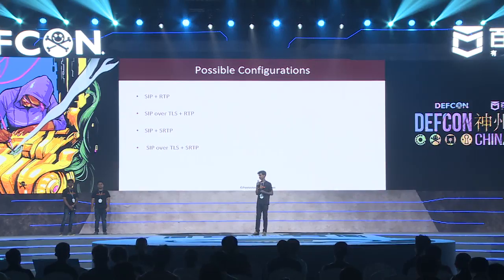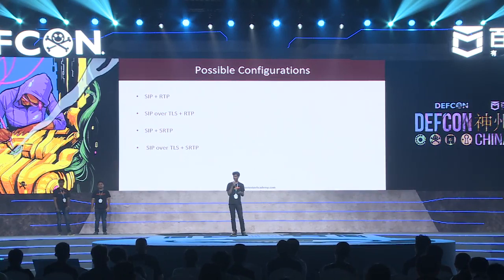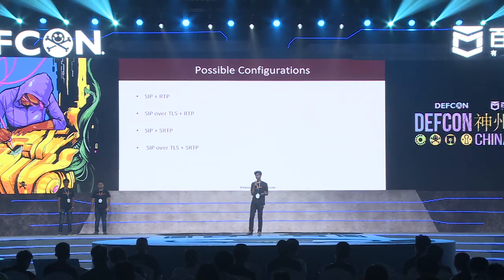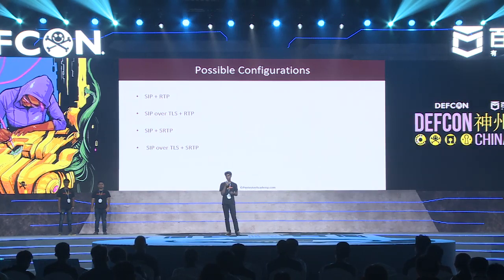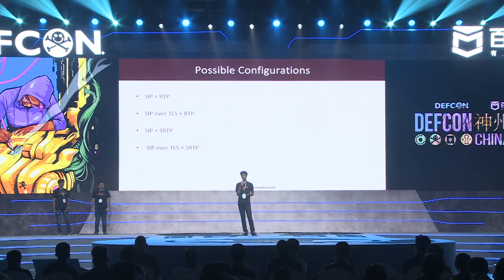When it comes to enforcing security in a VoIP setup, there are four possible scenarios. First: SIP and RTP — both unencrypted. Second: SIP over TLS with RTP unencrypted. Third: SIP unencrypted with SRTP instead of RTP. Fourth: SIP over TLS with SRTP. These represent the configurations we encounter when doing VoIP traffic analysis.